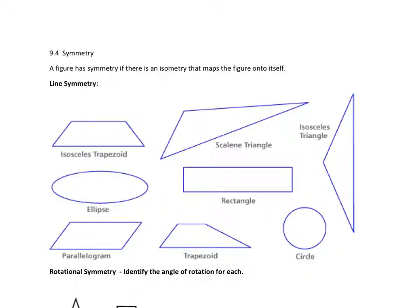A figure has line symmetry if you can draw a line, fold it in half, and the two sides match up. An isosceles trapezoid has a line of symmetry because corresponding points fold over — but it has to be an isosceles trapezoid, not just any trapezoid. A scalene triangle has no lines of symmetry; there's nowhere you could draw a line and have it fold in half.